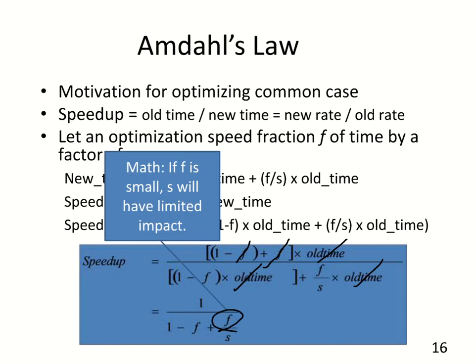Looking at this mathematically, if f — the fraction you're actually changing — is small, whatever the value of s is will have a limited impact, because the term f/s will be very small. The term (1 - f) will dominate, staying close to 1, and so the speedup ratio will be very close to 1. This motivates us to ensure we're spending time on mechanisms that give us nice speedup factors for portions of the program that are as large as possible — we really want f to be large so the optimization is broadly applicable.